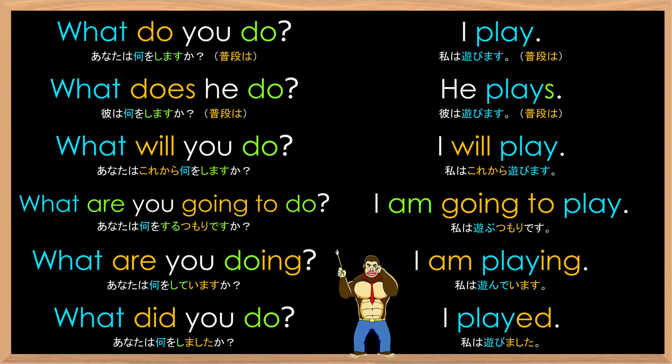Okay, let's try that at a normal pace. Here we go. 'What do you do?' — 'I play.' 'What does he do?' — 'He plays.' 'What will you do?' — 'I will play.' 'What are you going to do?' — 'I am going to play.' 'What are you doing?' — 'I am playing.' 'What did you do?' — 'I played.'